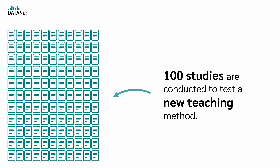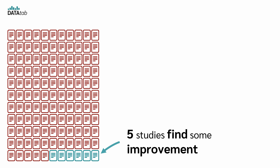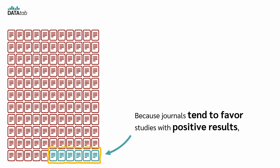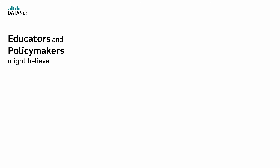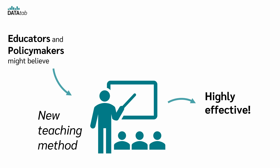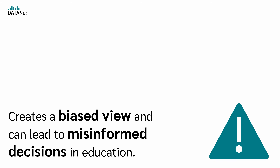But why is that a problem? Imagine 100 studies are conducted to test a new teaching method. Out of these, 95 studies find that the method has no significant impact on students' learning, while 5 studies find some improvement. Because journals tend to favor studies with positive results, only the 5 studies showing improvement get published. As a result, educators and policymakers might believe that this new teaching method is highly effective, even though most of the research shows it doesn't make a significant difference. This creates a biased view and can lead to misinformed decisions in education.